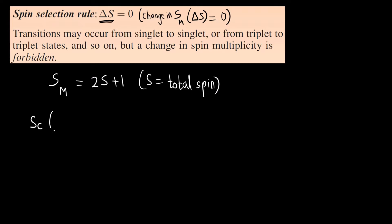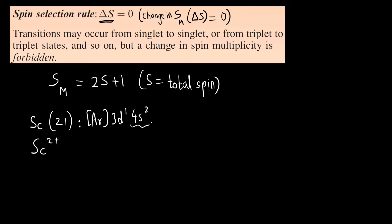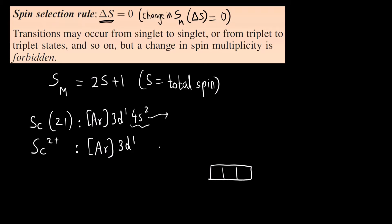For scandium 2+, the atomic number of scandium is 21, so its electronic configuration is [Ar] 3d¹ 4s². Scandium 2+ means we remove the two loosely bound 4s electrons, so the electronic configuration for Sc²⁺ is [Ar] 3d¹. There is only one electron in the d orbital. It is an octahedral complex.